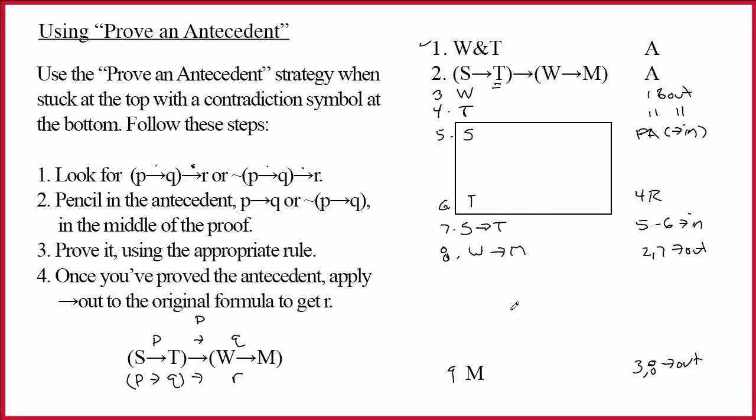The point of doing it in this alternative way is to acknowledge that Prove an Antecedent doesn't have to be done when you're stuck at the top with a contradiction symbol at the bottom. I invite you to, what I'm trying to do is build a method that will get every proof done with sort of the minimal amount of creativity. That it will just, I want to build a method that will mechanically do every proof.